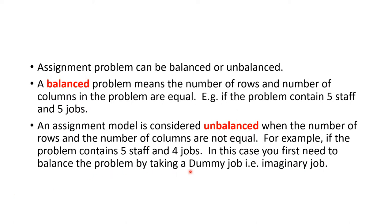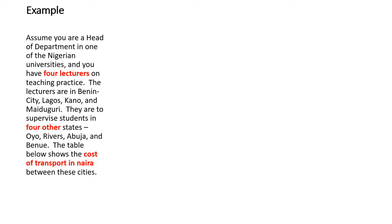In an unbalanced case, you need to balance the problem by adding a dummy job, which is imaginary. Now let's look at an example: assume you are a head of department in a Nigerian university and you have four lecturers on teaching practice. The lecturers are in Benin City, Lagos, Kano, and Maiduguri.